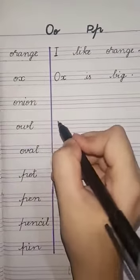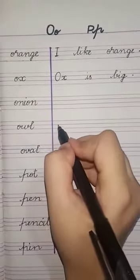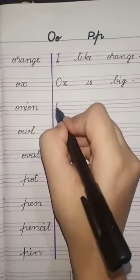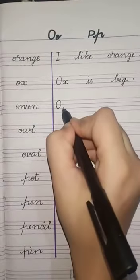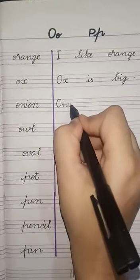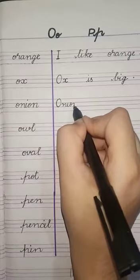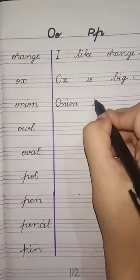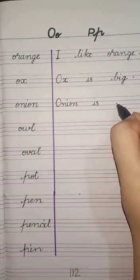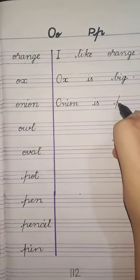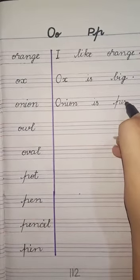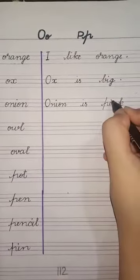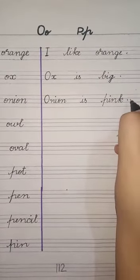Next is Onion. Onion kehet hai pyaas ko. Hum sentence make karenge: Onion is pink. Pyaas gulab bhi hai. Capital O, N-I-O-N, onion. One finger gap, then 'is'. Again finger gap, then pink: P-I-N-K. Onion is pink. And last, full stop.